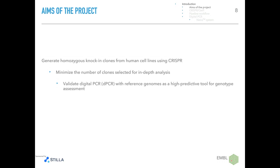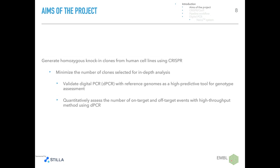We counted integrated tag-copy numbers of edited genomes that were pre-validated using Southern blot and that served as reference genomes. On top of this, we further validated the use of digital PCR to compare the performances of two different CRISPR strategies, already known to differently affect off-target rates.